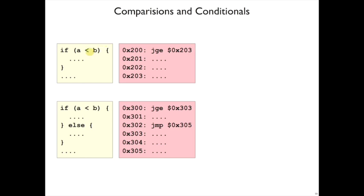So now, the way we would actually write these kinds of conditionals in machine code here is that a less than b, that means we want to jump down here if a is greater than or equal to b, so that's a jge instruction.